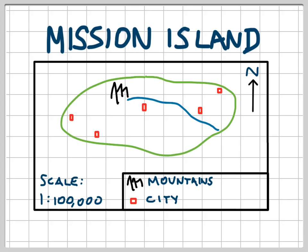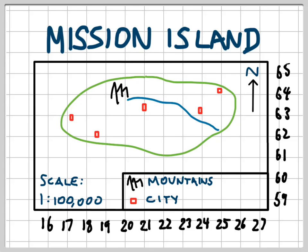When you see maps like this, they will often have numbers along the bottom and up the side. Here's what a map of Mission Island might look like with those numbers in place. You'll see there are two sets of numbers. The first set of numbers are along the bottom of the map — they might appear along the bottom or along the top — but the numbers get larger as you move to the east. These numbers are called Eastings.